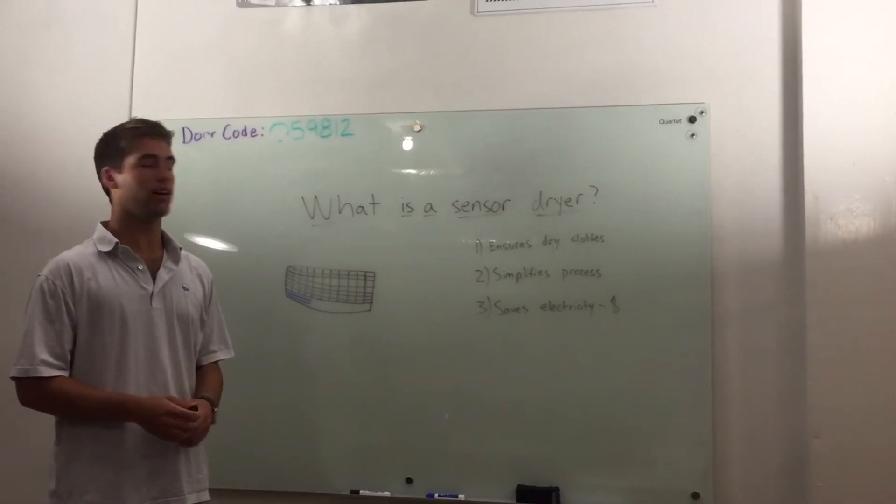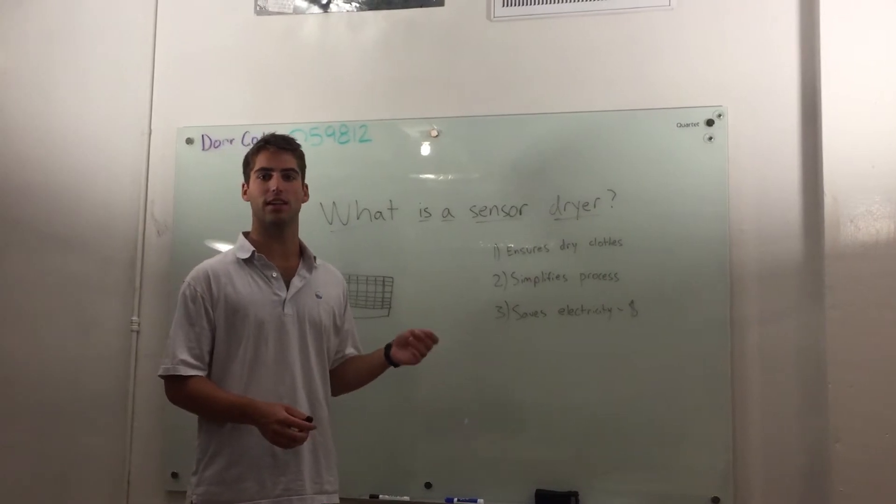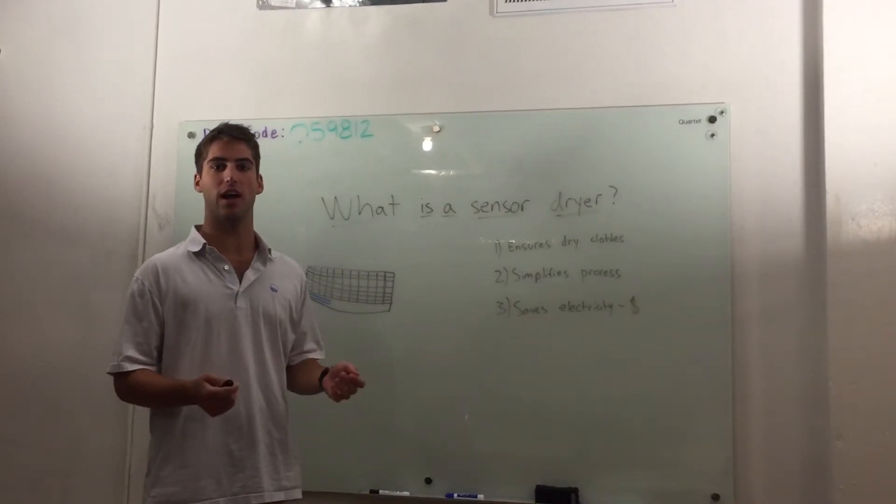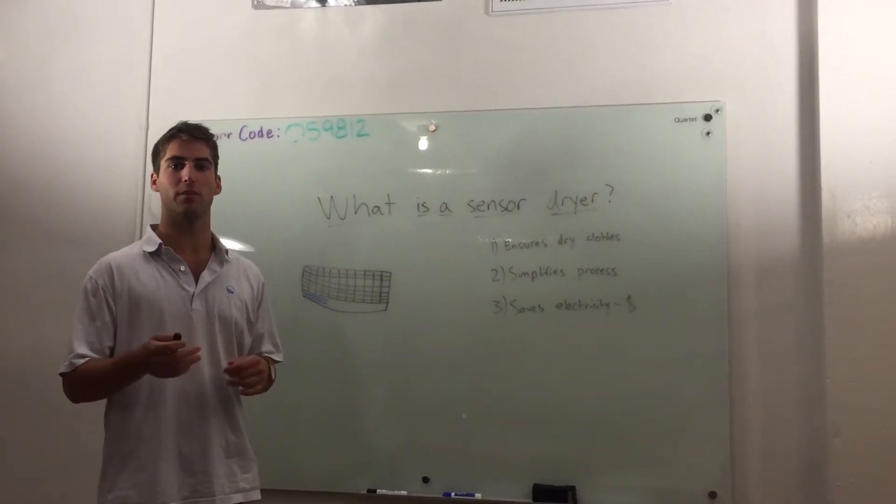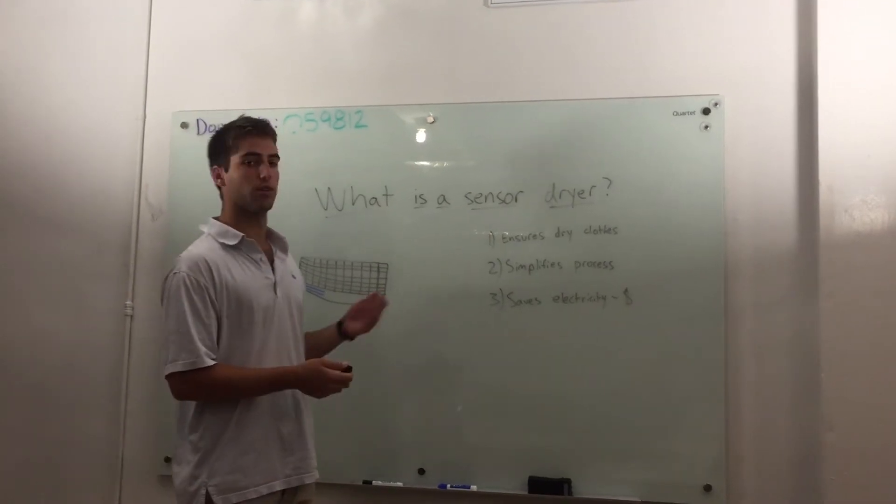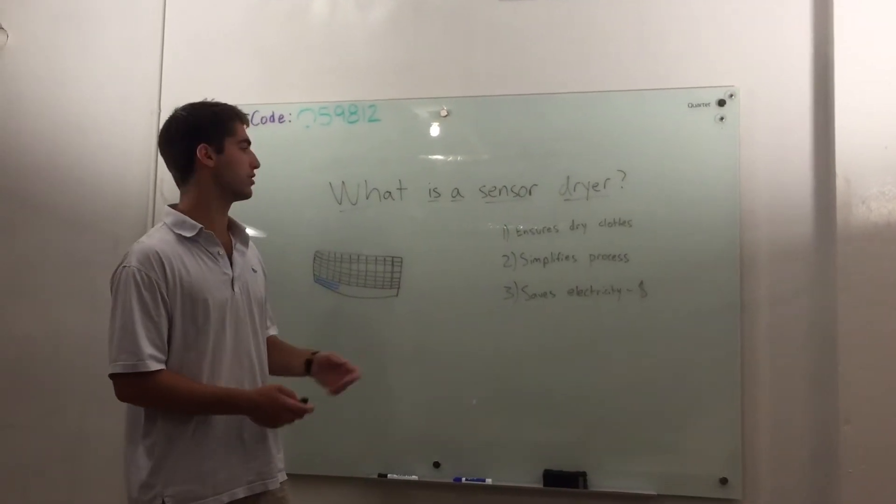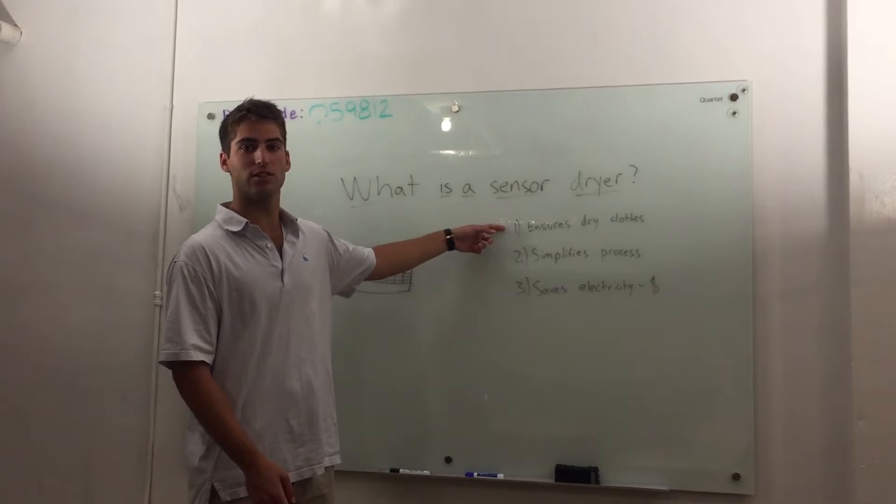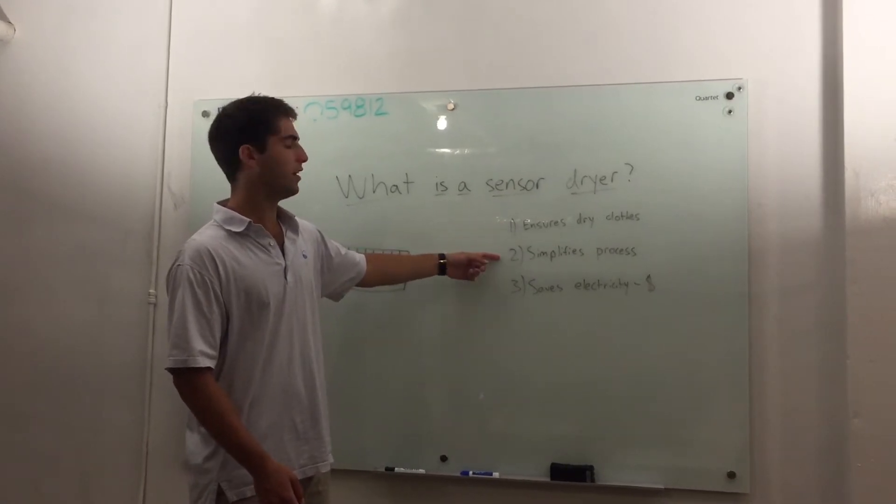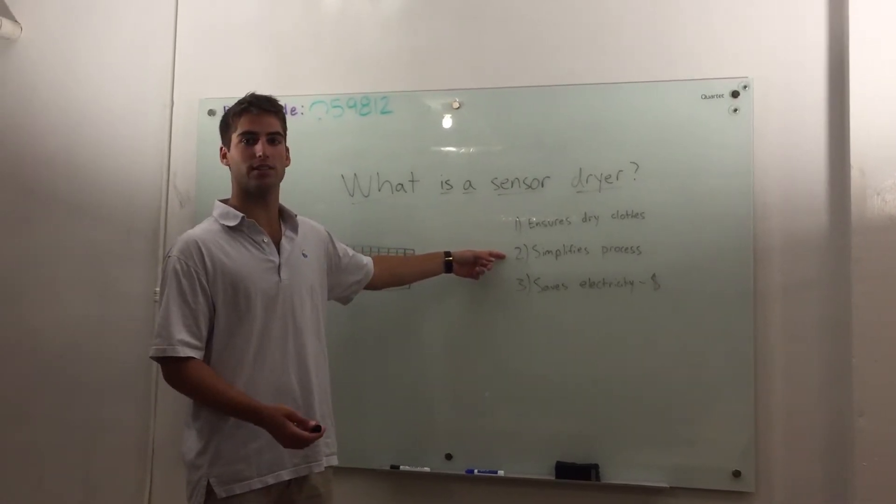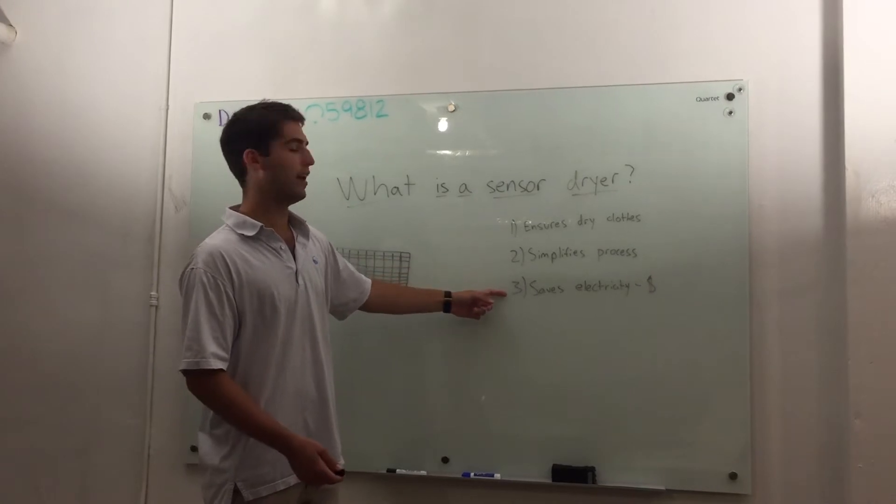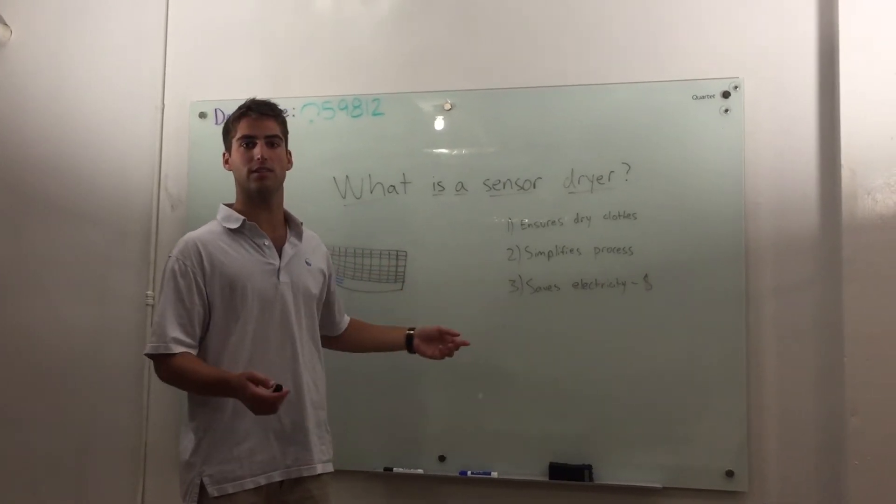So what is a sensor dryer? A sensor dryer uses sensor technology to know when clothes are dry and they'll save electricity and limit them from overdrying. Three main benefits with the sensor dryer are that it ensures dry clothes and simplifies the laundry process for the user and it saves electricity thus saving money.